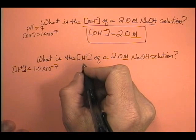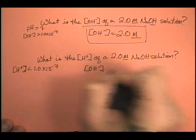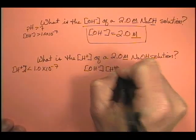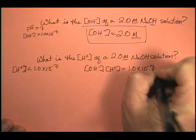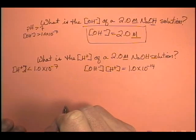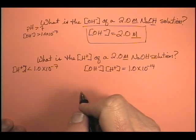So, what do we know? Well, we know that the hydroxide ion concentration times the hydrogen ion concentration is equal to 1.0 times 10 to the minus 14. We know that, because this is an aqueous solution.